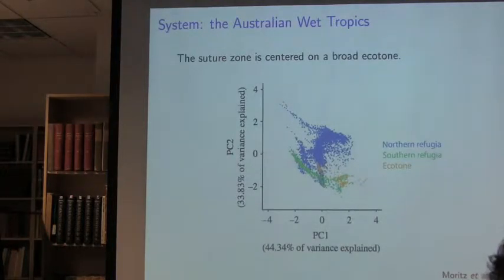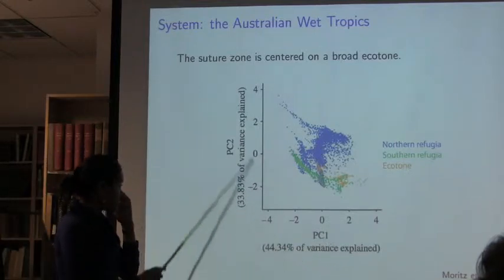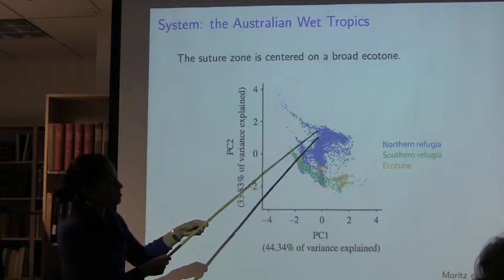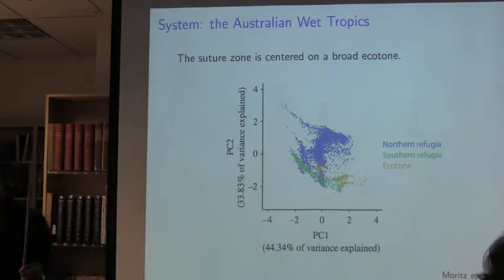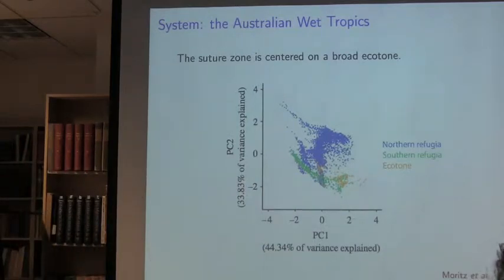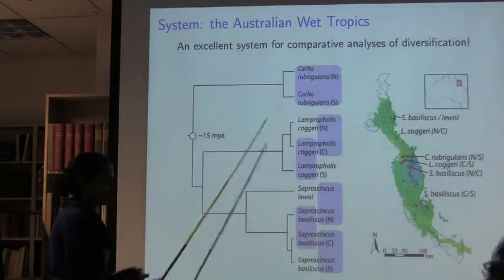A question I always get is whether there's some kind of environmental gradient setting up these hybrid zones. There is an environmental gradient — BioClim data summarized as PCs, where blue dots are from the northern refugia, green dots from the southern refugia, and orange dots from the ecotone. There is an environmental gradient, but it's quite broad and there's no absolute ecotone. Given all that, I think this is an excellent system for comparative analyses of diversification. In my thesis I focused on lineages within three species complexes: Carlia rubrigularis, the red-throated skink, Lampropholis coggeri, and Saproscincus lewisi and Saproscincus basiliscus.